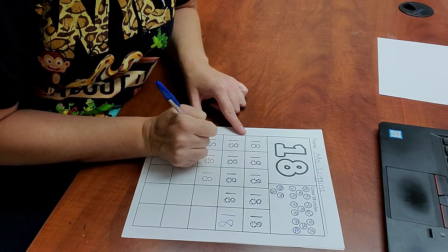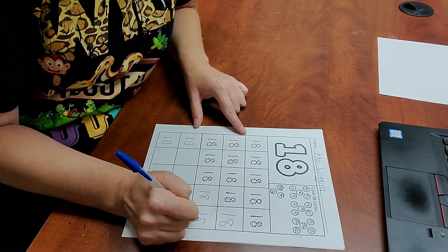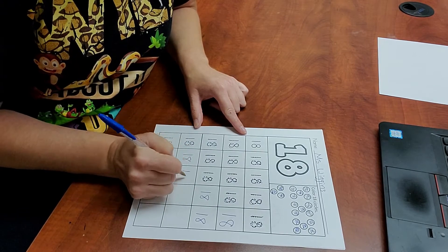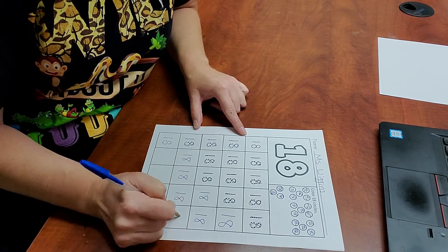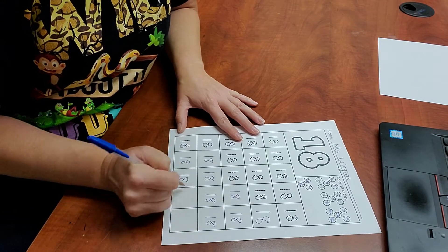Okay, keep tracing. And then write it by yourself. Two of them. Trace. And then write four of them by yourself. And again, trace. And then write four of them by yourself.